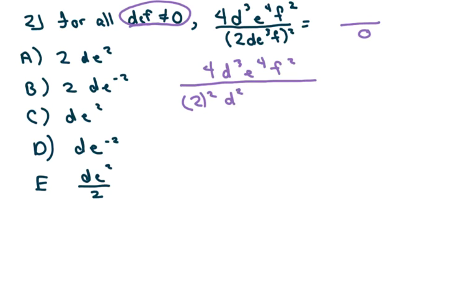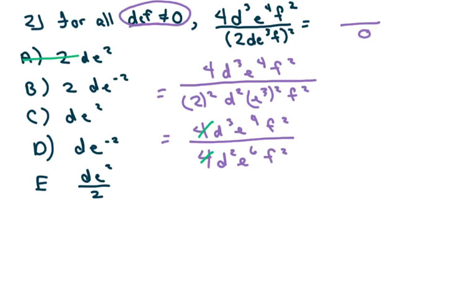So, D squared, E cubed squared, F squared. So this, you have to distribute each part. So, this equals 4D cubed, E to the 4th, F squared. And then you have 4, and D squared, E to the 6th, that's your power property, and F squared. So, right away, you cancel those two out, so we know it's not going to be A and B. And we can cancel the F's out, which these three don't have F's.